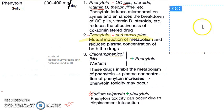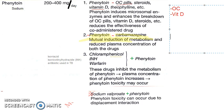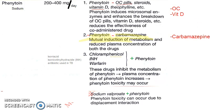Phenytoin reduces the action of oral contraceptive pills, so OCPs may fail and the patient may get pregnant — very important to note. Vitamin D effectiveness is reduced, leading to osteomalacia and hypocalcemia. Phenytoin also reduces the effect of carbamazepine; giving both together causes mutual induction of metabolism — both get metabolized and rendered ineffective.